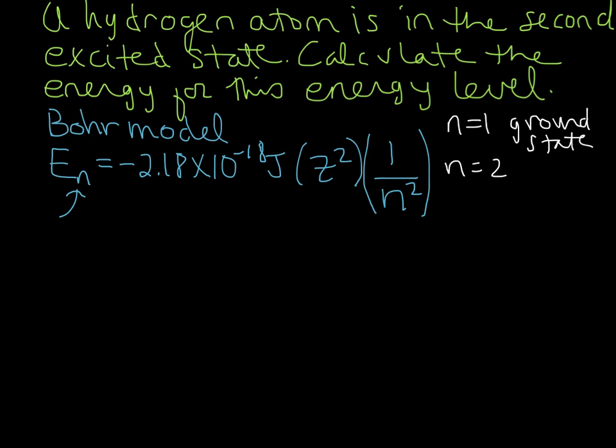n equals 2 is the first excited state. So now, if n equals 2 is the first excited state, and we have the second excited state, what do you guys think n is? And if you said n equals 3, then you would be right.